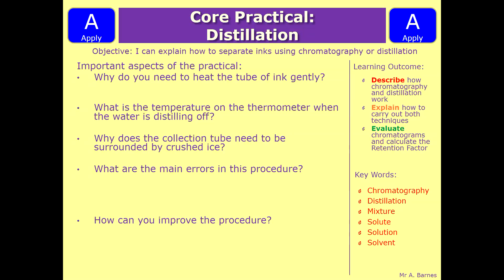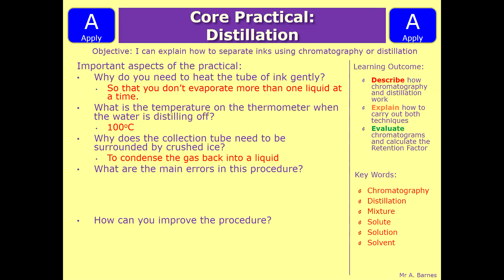Going through each one: why do you need to heat the tube of ink gently? In distillation you need to make sure you're not evaporating more than one liquid, so if you heat it too vigorously you're going to evaporate more than one substance, which you don't want. What is the temperature of the thermometer when water is distilling off? That's the boiling point of water, which is 100°C. Why does the collection tube need to be surrounded by crushed ice? Once you've evaporated it you need to condense it back down as quickly as possible — the answer is to condense the gas back into a liquid.